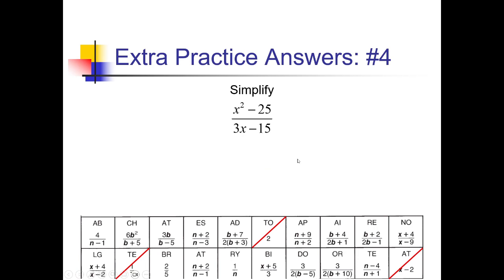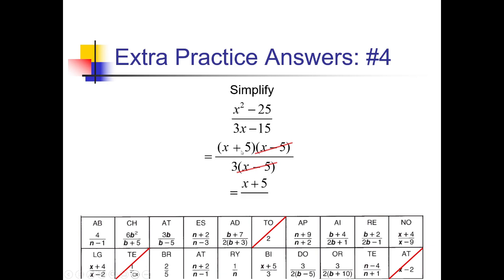On number 4, it looks like the numerator and denominator can both be factored — the first time that's happened on this puzzle. For the numerator, that's another plus-minus shortcut. Square root of x squared is x, square root of 25 is 5, so (x + 5)(x − 5). Down below, I have a common factor of 3 I can take out from everything, leaving me with 3(x − 5). The (x − 5)s cancel, and in the numerator I still have (x + 5); denominator now just has a 3. So (x + 5) over 3. I see that over here toward the middle — 'bi' is crossed off.